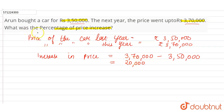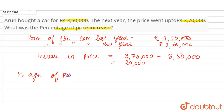To calculate the percentage of price increase or decrease, we use: increase or decrease in price divided by the price of the car last year, multiplied by 100. So the percentage of price increase equals rupees 20,000 divided by the price of the car last year.